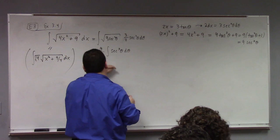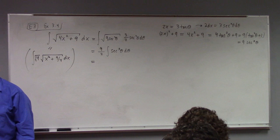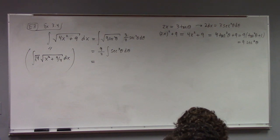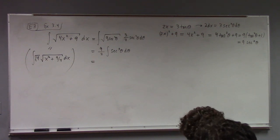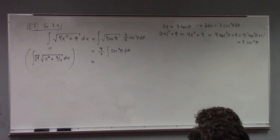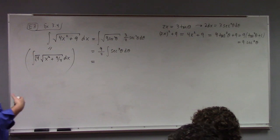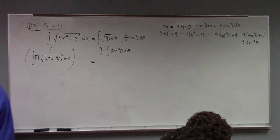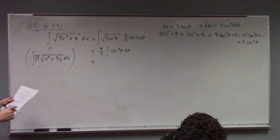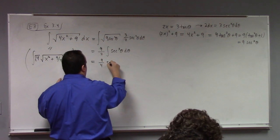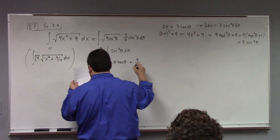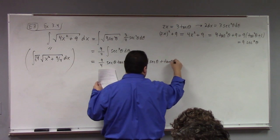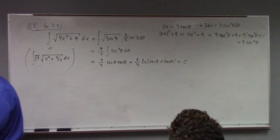Dr. Sperano says the integral of secant cubed is like that one creepy guy you keep running into in the elevator — you don't really want to acknowledge it, but it's always there, and you have to deal with it. So here it is again. Using the known result, we get 9/4·sec(θ)·tan(θ) + 9/4·ln|sec(θ) + tan(θ)| plus a constant. This problem is nastier than it looks.